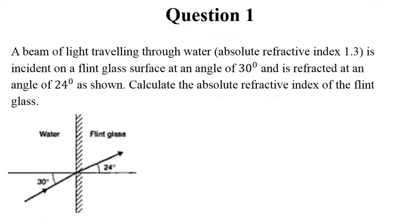So we want to go to Question 1. A beam of light travelling through water of absolute refractive index 1.3 is incident on a flint glass surface at an angle of 30 degrees and is refracted at an angle of 24 degrees, as shown in the diagram here. You can see this is 30 incident, 24 refraction angle of refraction. So this is the glass we're talking about, this is from water. So calculate the absolute refractive index of the flint glass.